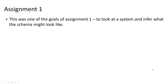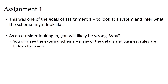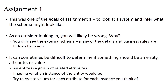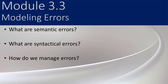This was a big part of the point of assignment one — to look at a system and infer what the schema might look like. As an outsider looking in, you're likely and almost definitely going to be wrong, because you only see the external schema, the view of the data being presented to you as a user or as an application. Many of the details and business rules are going to be hidden from you, and it can be difficult to determine if something should be an entity, an attribute, or a value. But these are the types of skills we're developing in this course, and what we'll continue to talk about for the rest of the semester.